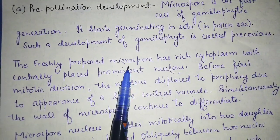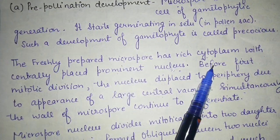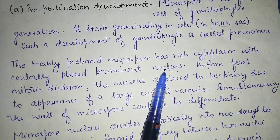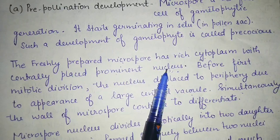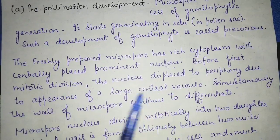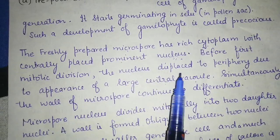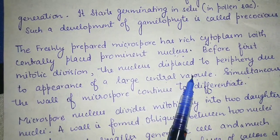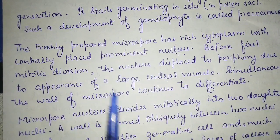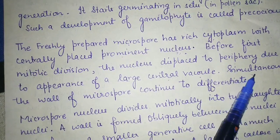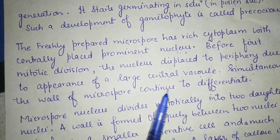The freshly prepared microspore has a very rich cytoplasm and a prominent central nucleus. When mitotic division occurs, the nucleus shifts to the periphery due to the appearance of a large central vacuole. So in the very early cell stage, a large central vacuole is formed.